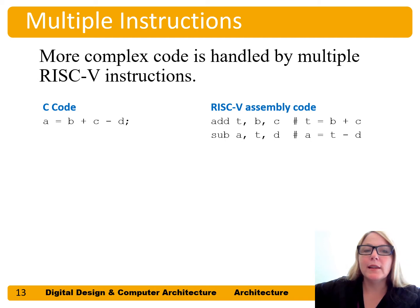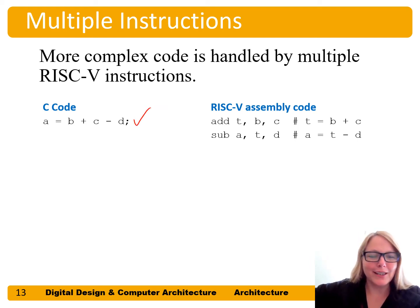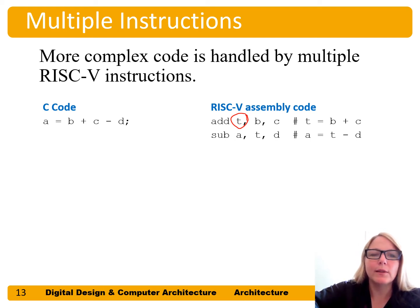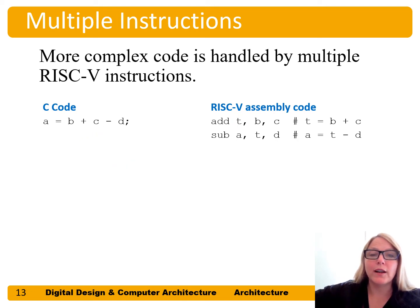We can implement more complex instructions by using multiple simple RISC-V instructions. Here's a more complex line of code to illustrate: a equals b plus c minus d. We add a temporary location for a temporary calculation. So t equals b plus c, and then a equals t minus d. We perform this line of code in two RISC-V instructions.